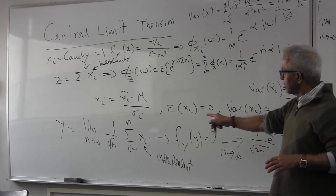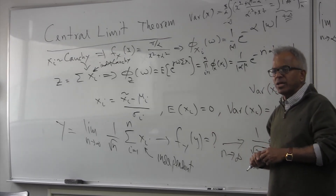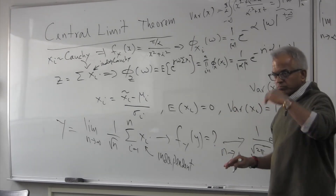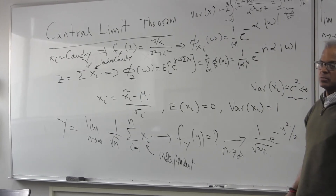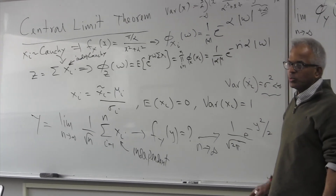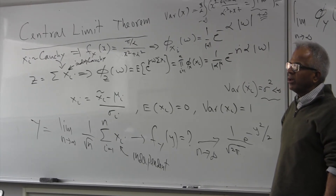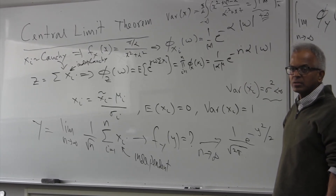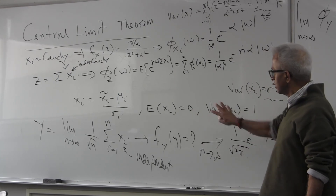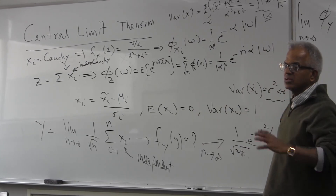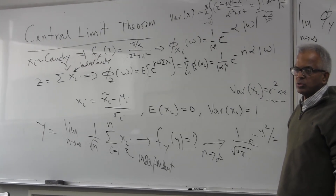So the correct statement is: if you have a bunch of random variables with finite variance, the overall sum distribution will tend to Gaussian under those conditions. One condition is that the variances should be finite. And if you scale them properly, you can make the sum density function have whatever variance you want.